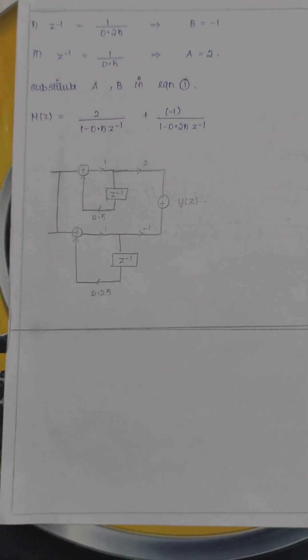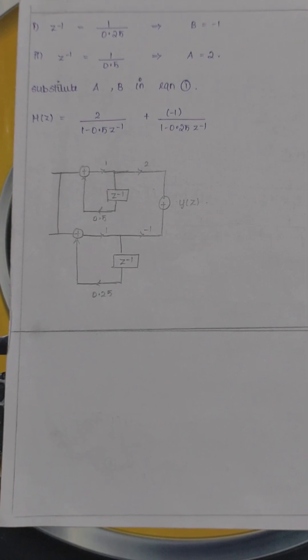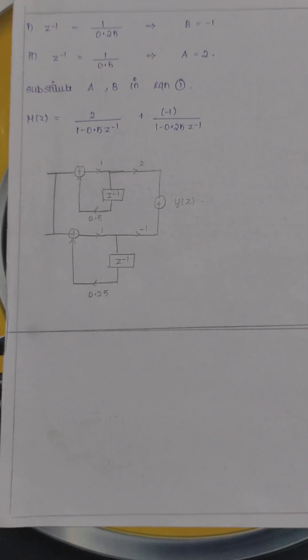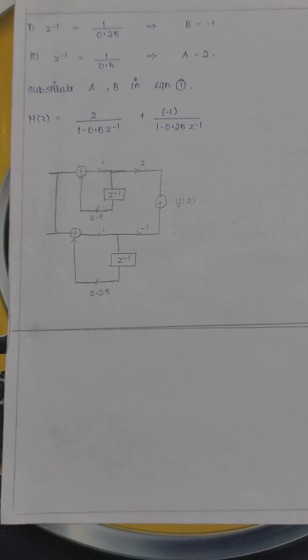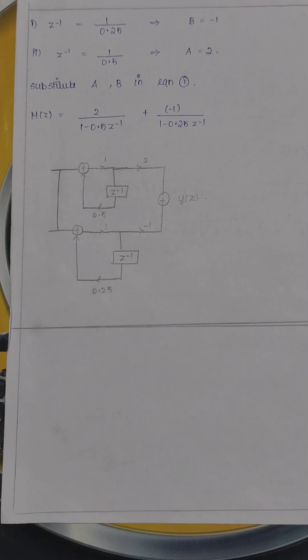Previous case was cascade form, you have to draw in series manner. It's a parallel form, you have to draw in parallel manner. There are two cases. First case in direct form 2, second case in direct form 2. Both will be in parallel.